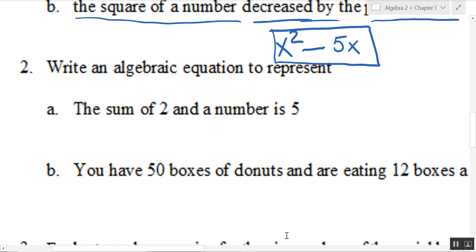All right, this first one says the sum of 2 and a number is 5. So the sum means we're adding 2 and a number, we'll call it x again, is equals 5. And you could have also written this as x plus 2 equals 5, remember that is the commutative property when we're changing order, commutative property of addition.